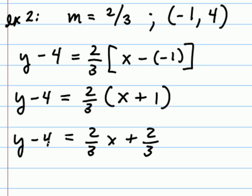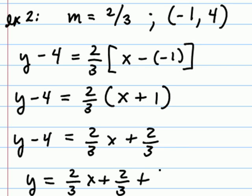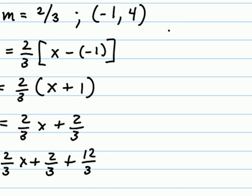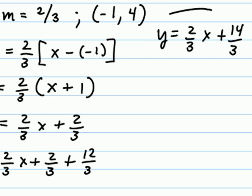The next step is to add 4 to both sides, recognizing that I will need a common denominator of 3. Instead of adding 4, I will add 12 thirds, which really is 4. Simplifying this, I get y equals 2 thirds x plus 14 thirds, which should be the equation of a line having a slope of 2 thirds and passing through the point (-1, 4).